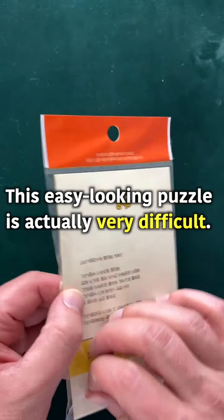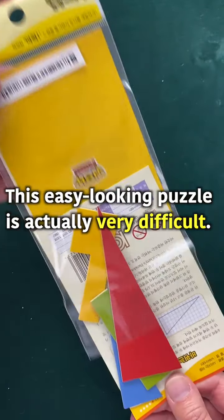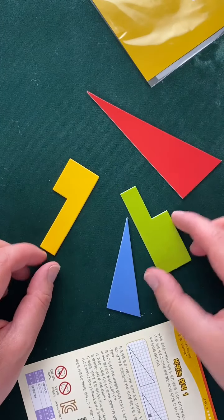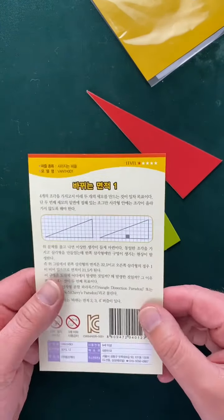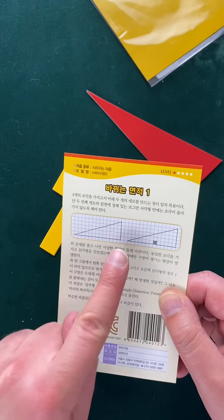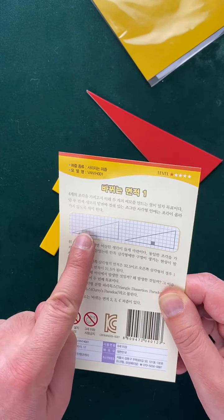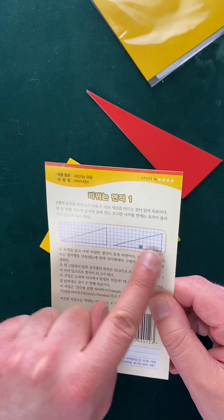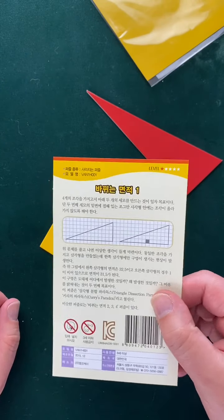This puzzle looks easy, but supposedly it's really hard, even though it just uses these four pieces. The goal is to make a regular triangle here. And they say this is the easy way to do it, which is a triangle.